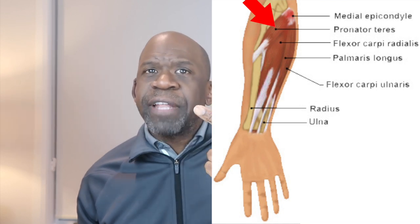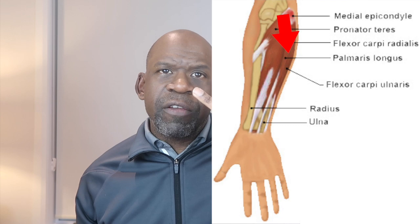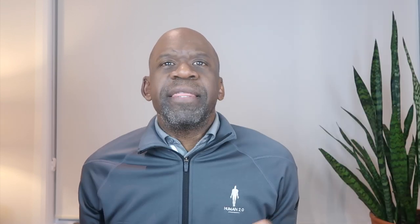The volar structures of the forearm and wrist are separated into several layers. The most superficial layer includes four muscles: the pronator teres, the flexor carpi radialis, the palmaris longus, and the flexor carpi ulnaris — muscles involved in pronation and flexion of the wrist. The second layer involves only one muscle, the flexor digitorum superficialis, which is involved in flexion of the fingers.